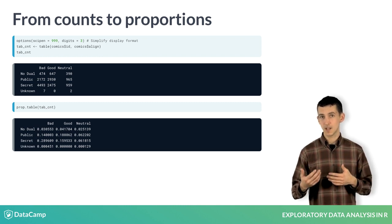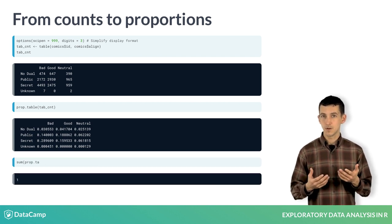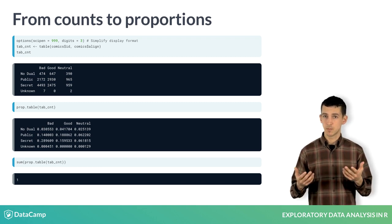We see here that the single largest category is characters that are bad and secret, at about 29% of characters. Also note that because these are all proportions out of the whole dataset, the sum of all these proportions is 1.